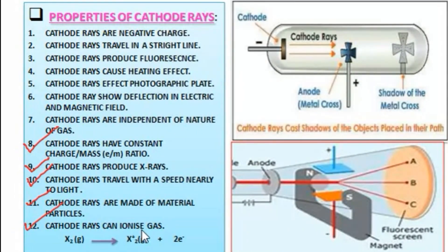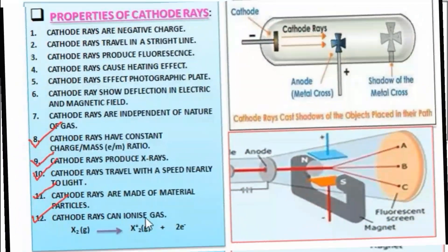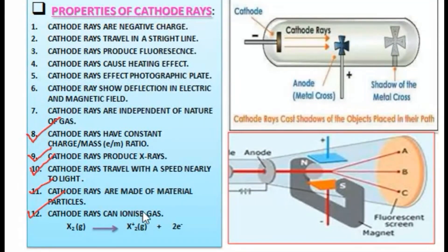Number 12, very important: cathode rays can ionize gas. What does this mean? When an inert gas is taken in the discharge tube, the atoms directly convert into cations and electrons. Like a neon sign lamp works on this principle. Suppose you take H2 gas and electric current passes at low pressure. This H2 gas converts to hydrogen atoms. Now this atom loses the electron and gets a positive charge. Here I've given X2 gas—suppose any gas, you can take helium or hydrogen. It loses electrons and becomes a positively charged cation.